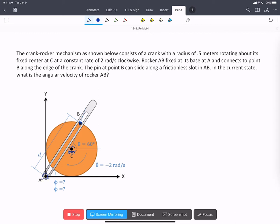The rocker is pinned at A. We're asked to find, at the current instant, what is the angular velocity of the rocker AB.